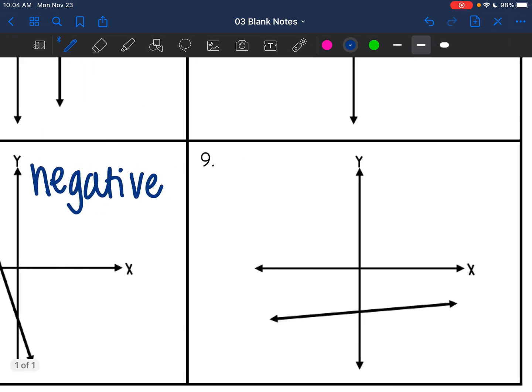And then number nine, it is almost horizontal, but not completely horizontal. So it cannot be a zero slope. It is going up slightly. So since it's going up, this is a positive line.